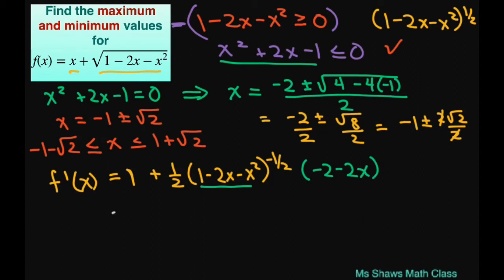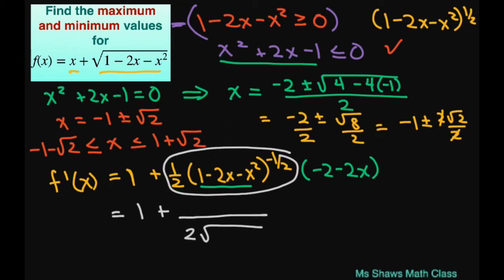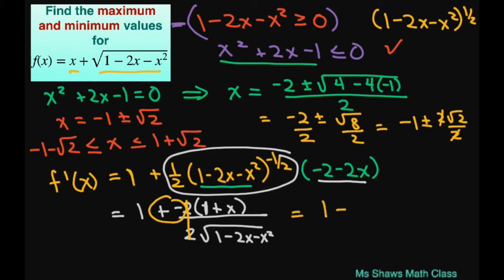Simplifying, we get 1 plus, moving the chain rule term into the denominator: 2 times the square root of 1 minus 2x minus x squared. Putting the inner derivative in the numerator and factoring out a negative 2 gives 1 plus x in the numerator. The 2's cancel and the negative flips the sign, so the derivative becomes 1 minus (1 plus x) divided by the square root of 1 minus 2x minus x squared.